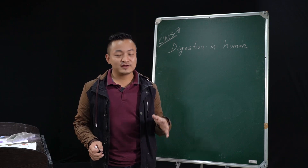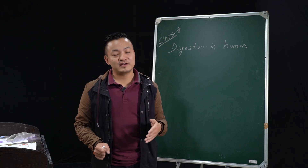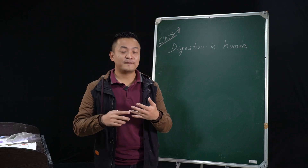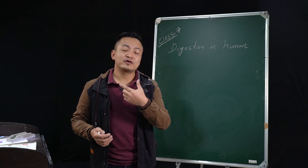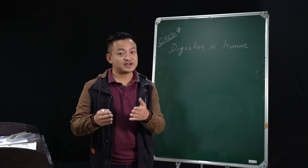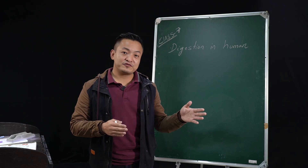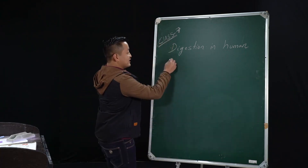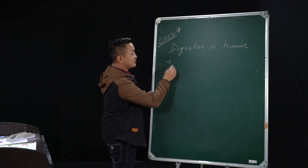It's a nine-meter-long coil. The organs present in the alimentary canal are: mouth, buccal cavity — also known as oral cavity — then food pipe or esophagus, then stomach, small intestine, large intestine which ends at the rectum, and finally the alimentary canal ends in the anus.